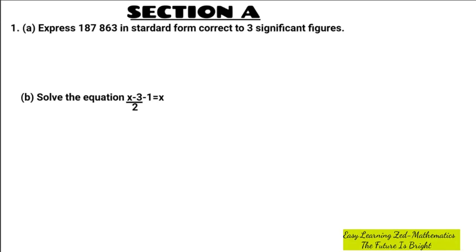Welcome to this video. I'm going to answer Mathematics Paper 2 Grade 9 from 2021, starting from question one to the last question, which is question eight. Watch this video to the end. I've looked at different examination papers and what I've noted is that exams come in the same way — the questions are the same, they just change numbers. So if you can go through one paper, you've essentially covered many papers.